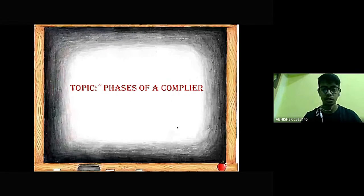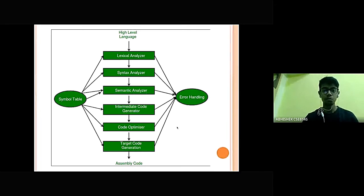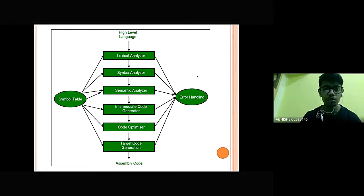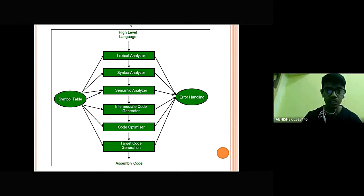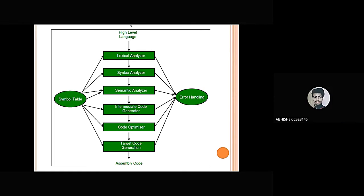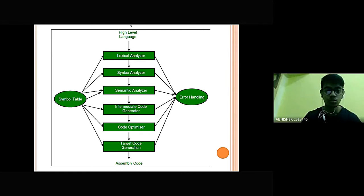Our topic is phases of a compiler. This is the main diagram of the phases of a compiler. We have seen in this diagram that a source code, which is a high level language, is converted to the assembly language or machine code. These are the different phases in which a high level language is converted into the assembly code or low level language.